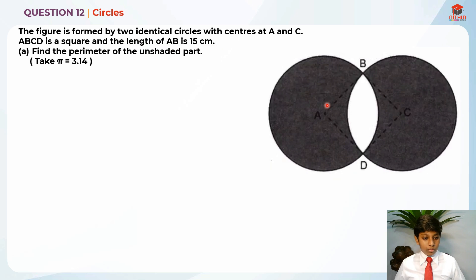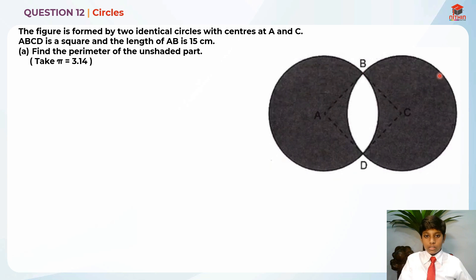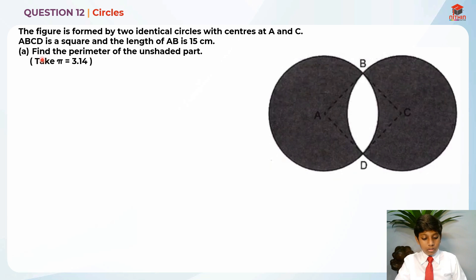The length of AB is 15 cm. So ABCD is a square and the length of AB is 15 cm. For Part A, they are asking us to find the perimeter of the unshared part. Find the perimeter of the unshared part, and we are supposed to take pi as 3.14.